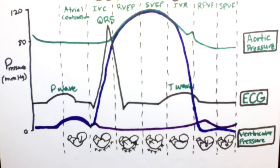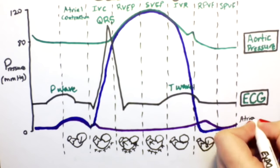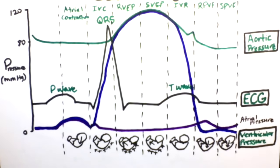The next wave we are going to take a look at is called the atrial pressure wave. We notice that the atrial pressure does not increase significantly — the only time that it does increase is during the atrial contraction phase.